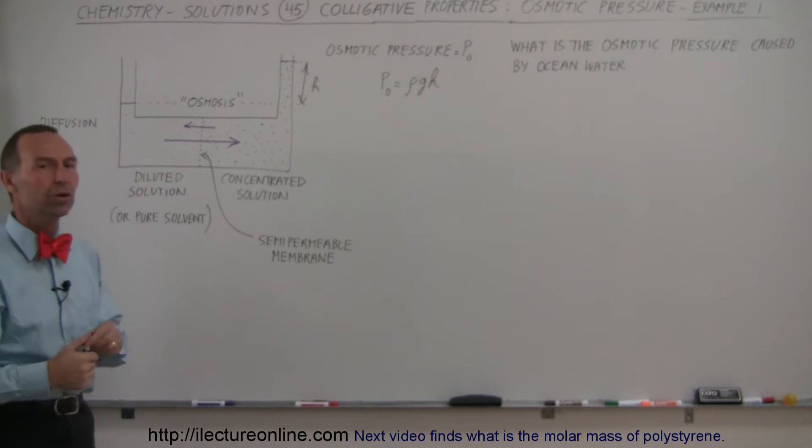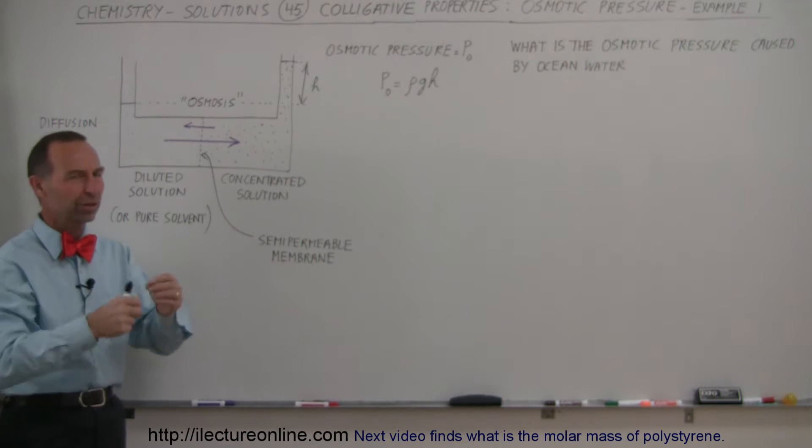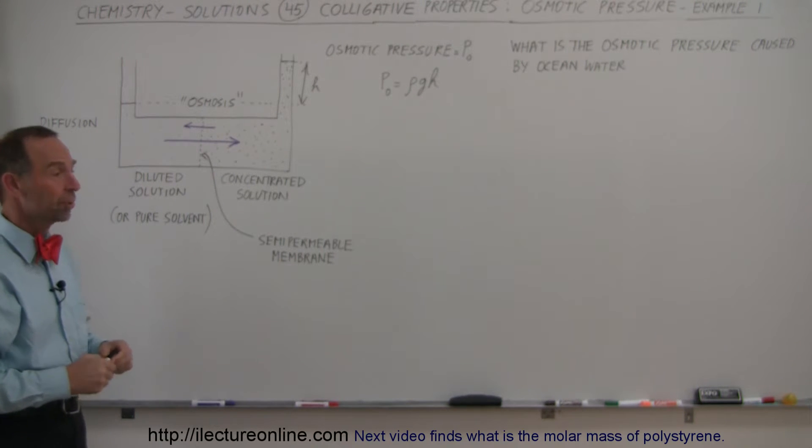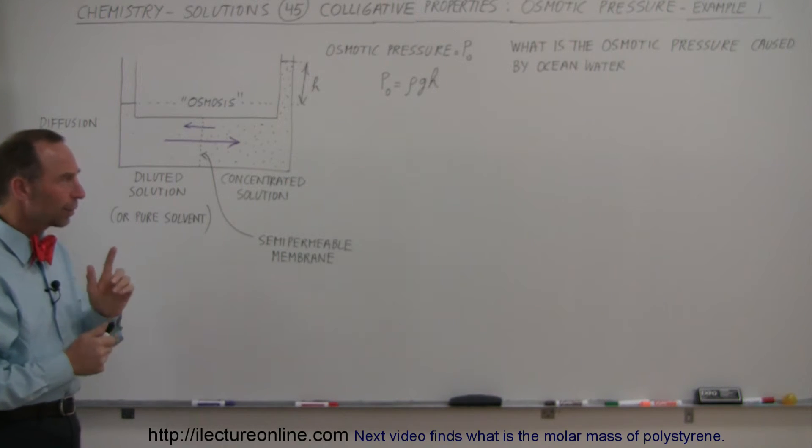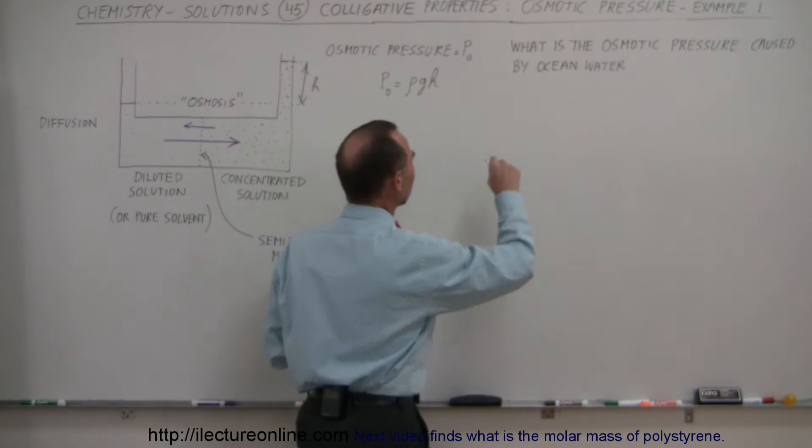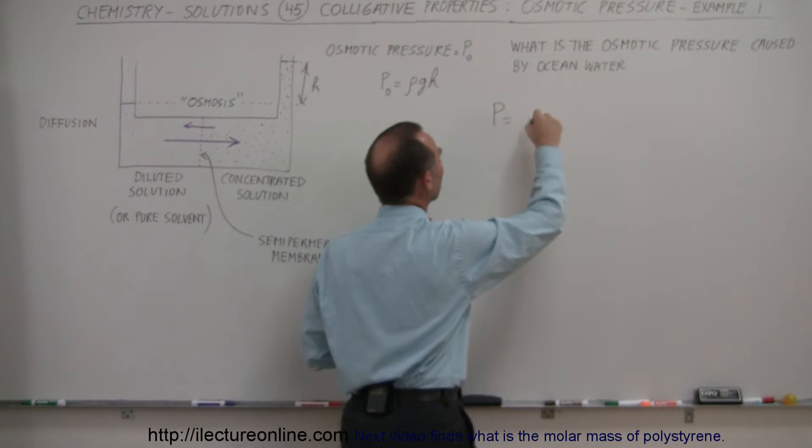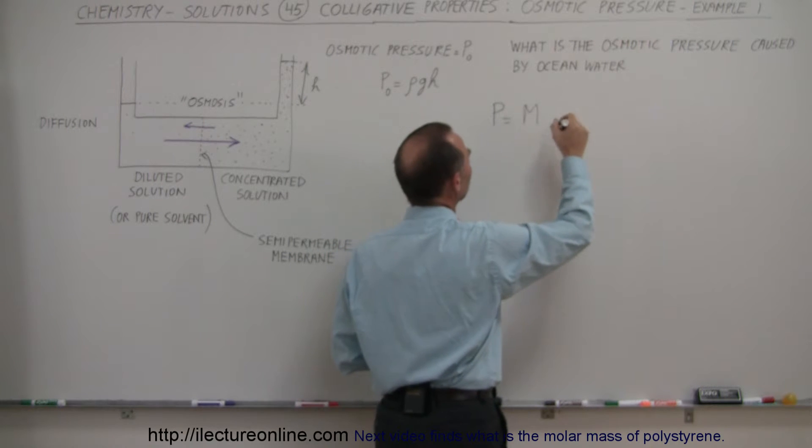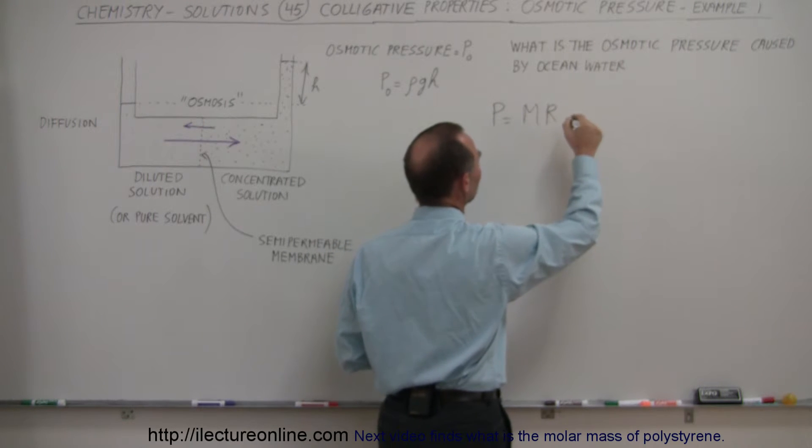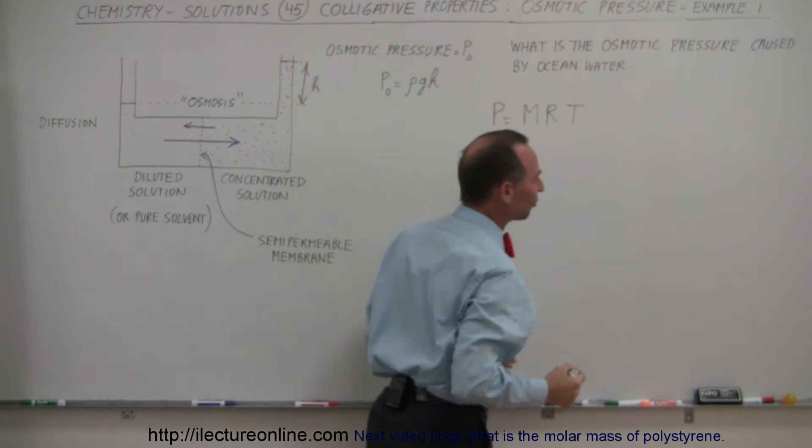Or a very dilute solution, like fresh water with just a little bit of stuff in it, like maybe the water we get from the tap. And so how do we figure that out? How do we calculate that? Well, the equation tells us that the osmotic pressure, P, is equal to the molarity of the solution times the gas constant, R, times the temperature.